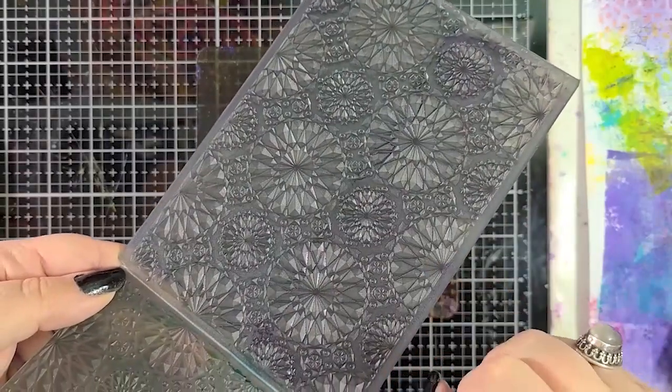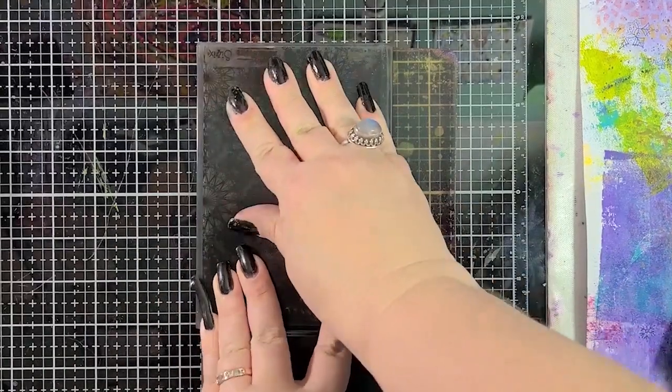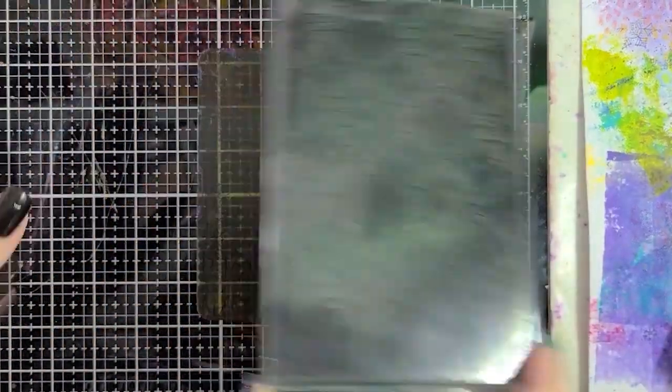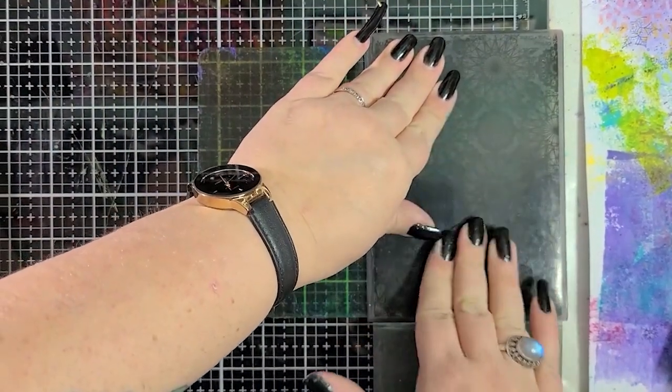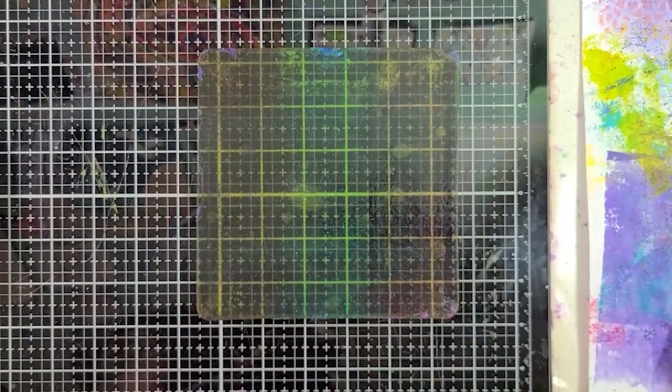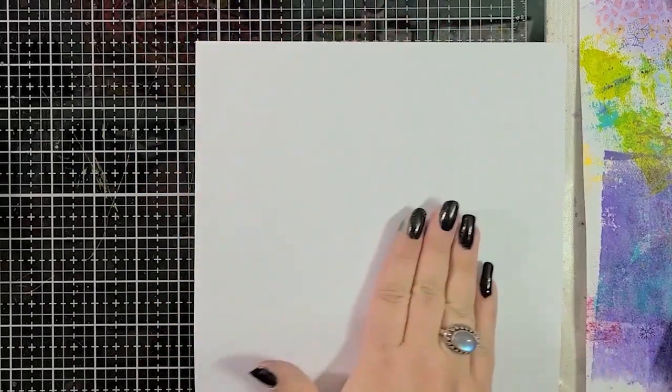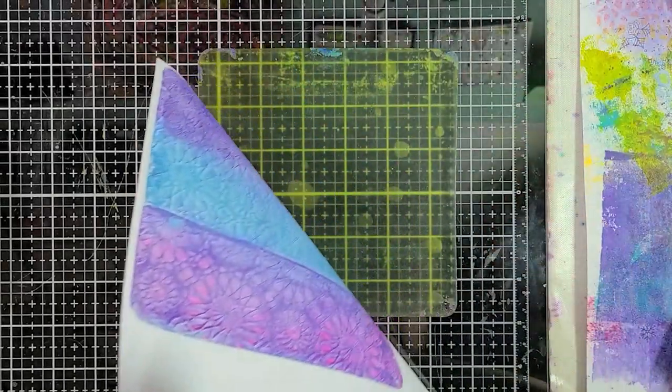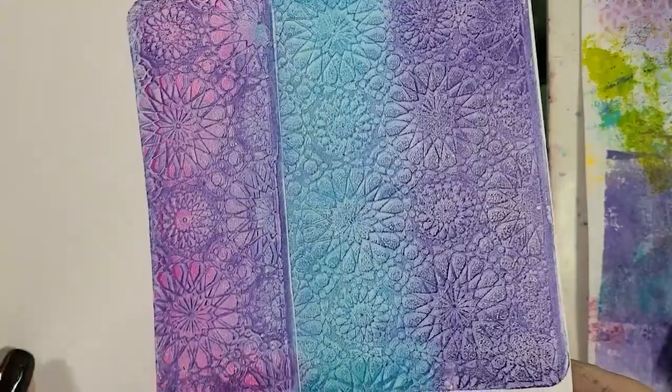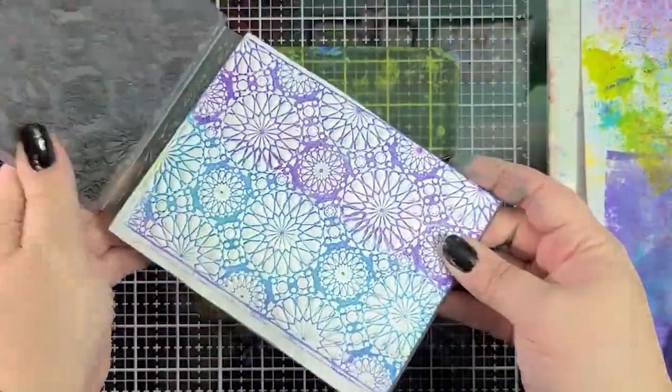Now I have this very cool embossing folder from Sizzix and Tim Holtz and I'm going to just press that into my gel press plate. I'm pushing down pretty hard and kind of wiggling it a little bit around because if you do that you get almost a look of movement and more depth as opposed to if you just press it down lightly and let it sit there for a second. So I've pulled the embossing folder off, and now I'm using just a piece of copy paper. Nice quality copy paper but copy paper nonetheless and you can see the definition that you get from that embossing folder and it came out really cool.